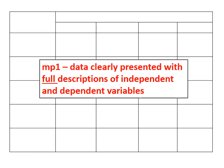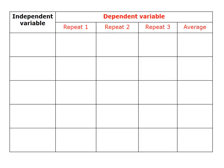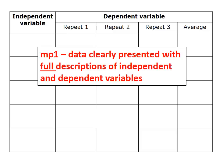So, the first mark point is that data is clearly presented with full descriptions of independent and dependent variables. So back to our example of pH and colour change. Independent variable, always in the top left hand column. Dependent variable is here, I'm doing three repeats and an average at the end.